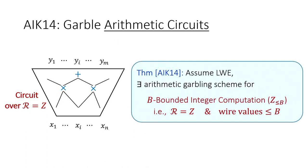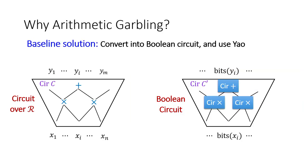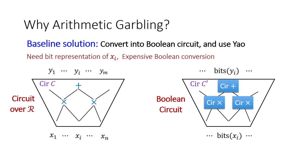In their paper, they construct a scheme for B-bounded integer computation, where multiplication and addition are computed over Z, but we always assume wire values to be bounded by some exponentially large B. Their solution uses the LWE assumption. We prefer such a definition over simply converting the circuit C into an equivalent Boolean circuit C-prime and applying Yao, because the Boolean circuit requires bit representation of inputs, which may be inconvenient, and the conversion from arithmetic to Boolean gates is concretely very expensive.